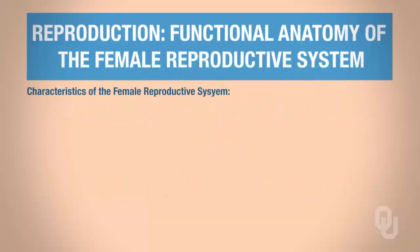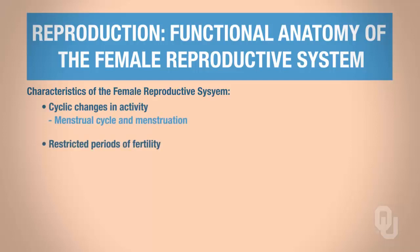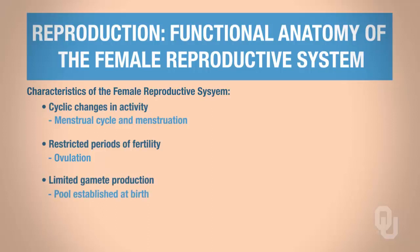Keep in mind that there are cyclical changes that occur via the menstrual cycle and menstruation. There are periods of restricted fertility, and that is occurring during ovulation. Females have a limited gamete production — in other words, females are born with a set number of oogonia. Oogonia are the female gametes. We don't make more oogonia throughout life; this is a pool that's established at birth, and that's all the oogonia females will ever have.